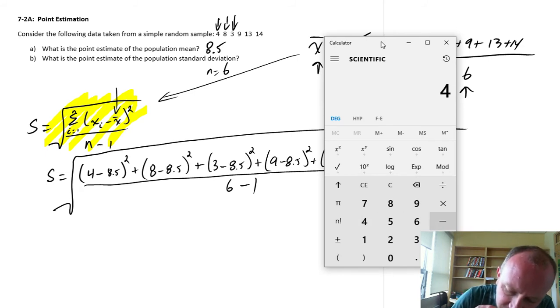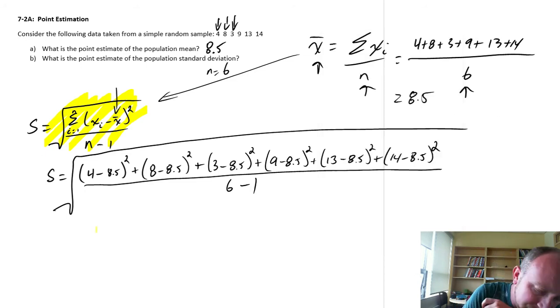So I'm going to start with that first deviation. So this is 4 minus 8.5. Something went horribly wrong there. 4 minus 8.5. So that's minus 4 and a half squared. So 2 and a quarter.